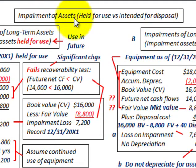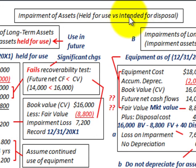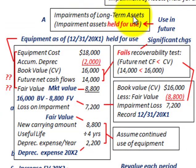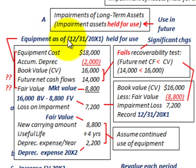What we're going to be looking at here is impairment of long-term assets, and we're going to be looking at two cases. These assets we can either hold for use in the future, or we can intend to sell or dispose of them. Let's start with our first case — impairment of long-term assets held for use — going through this example for equipment as of 12/31/20X1.